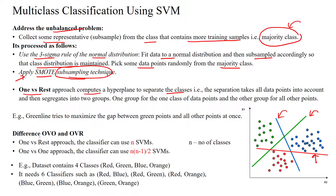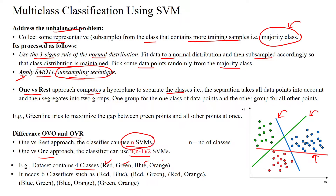The difference between one versus one and one versus rest is that one versus rest needs n number of classifiers, but in one versus one we need n times (n minus 1) divided by 2 classifiers. For example, when you have a dataset with four classes — red, green, blue, orange — we need only four classifiers in the one versus rest approach.